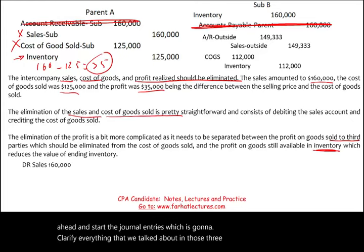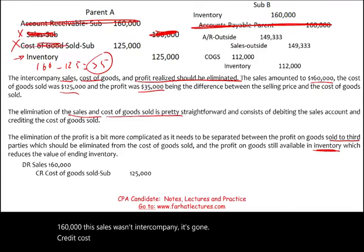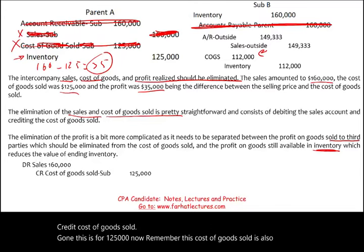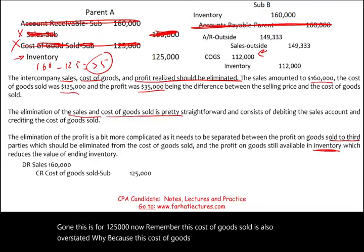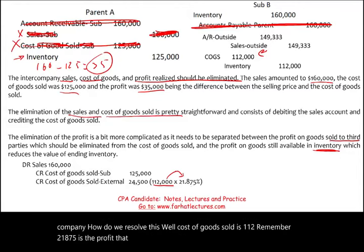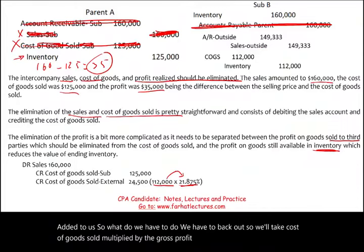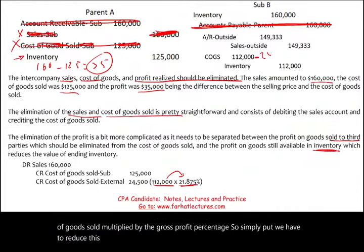First, debit Sales $160,000 — this intercompany sale is eliminated. Credit Cost of Goods Sold $125,000 — also eliminated. However, note that Company B's cost of goods sold of $112,000 is overstated because it includes parent company profit. We must back that out: $112,000 × 21.875% = $24,500. So we additionally reduce Cost of Goods Sold by $24,500, representing the intercompany profit embedded in the goods B sold to outside parties.